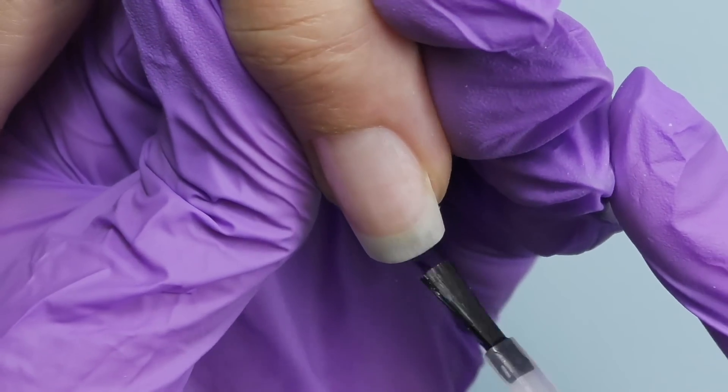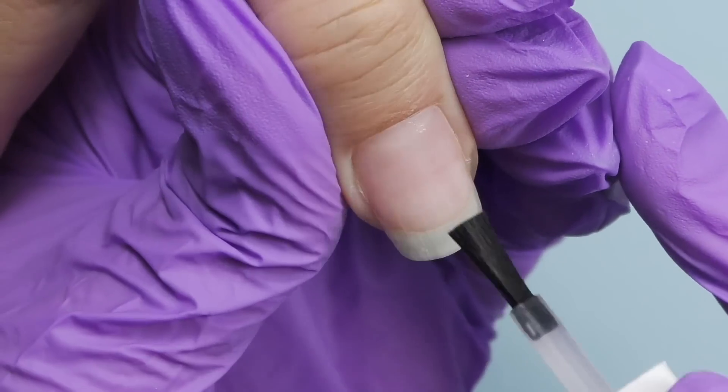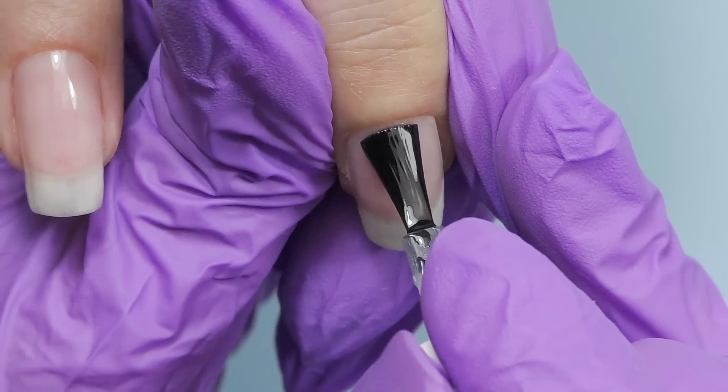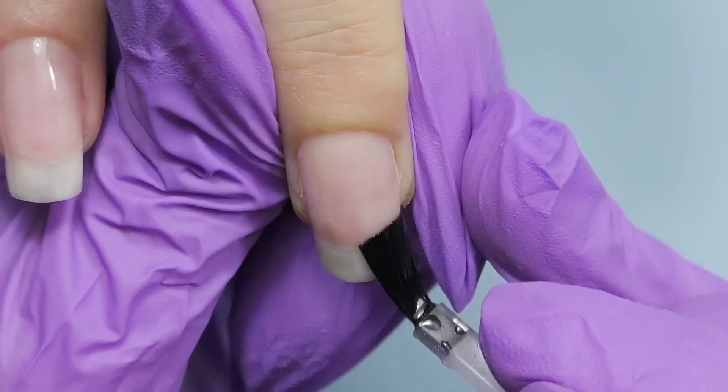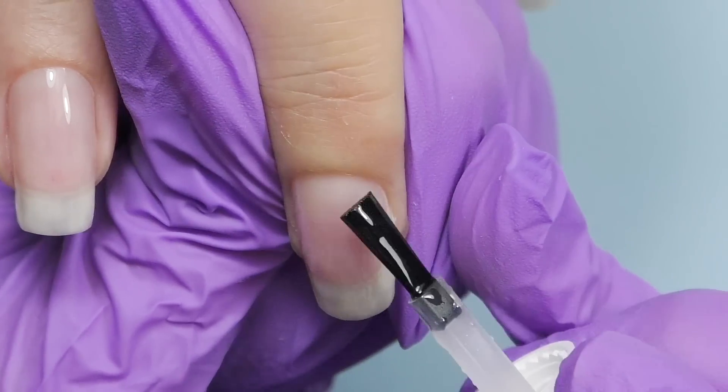And the next step will be applying base coat. It's called foundation gel, and also included in this kit. We need a very thin coat, and since it has this thin consistency, it's super easy to do that.